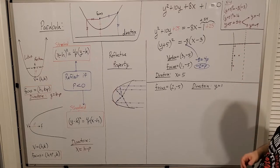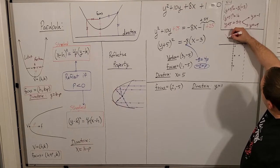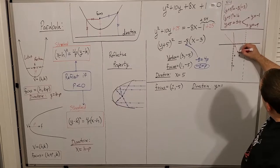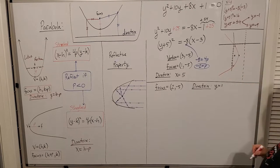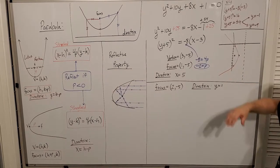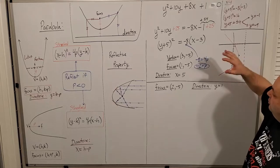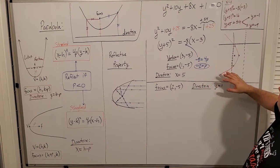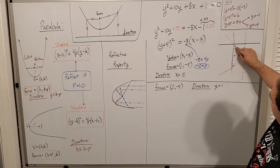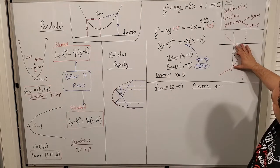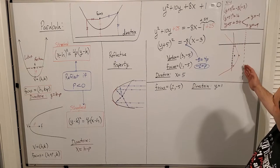Notice there's a distance of 4 above and 4 below the focus for a total latus rectum length of 8, which is indeed 4 times p. The important features are: the vertex, the focus, the directrix, and the points on each end of the latus rectum. The latus rectum occurs where the coordinate equals that of the focus — specifically, where the coordinate parallel to the directrix equals the focus value.